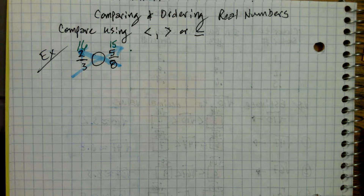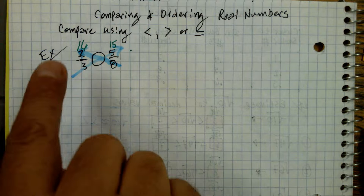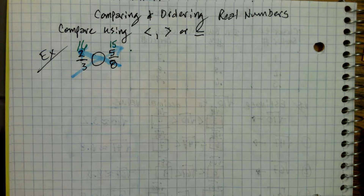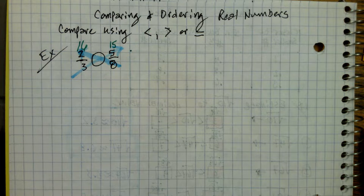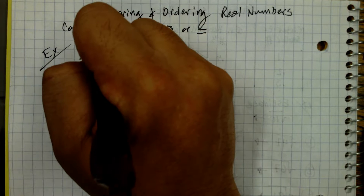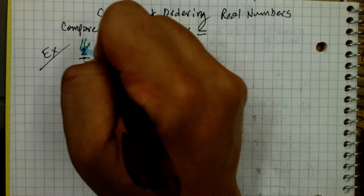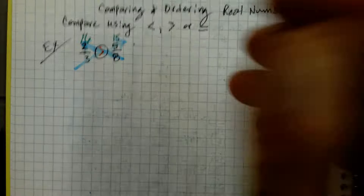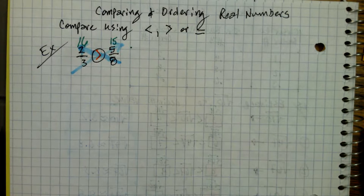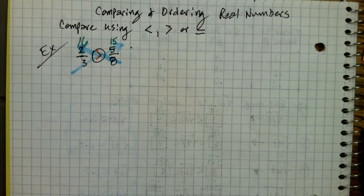Now you're not comparing two-thirds to five-eighths — you're comparing 16 to 15. And obviously 16 is greater, so two-thirds is greater than five-eighths. That works great in this situation.